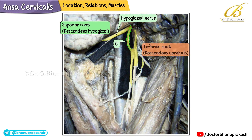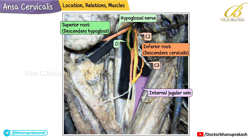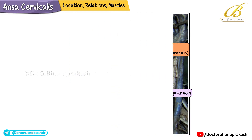The inferior root, or Descendens cervicalis, is derived from C2 and C3 spinal nerves. It winds around the internal jugular vein and joins with the superior root to form the loop of the ansa cervicalis.